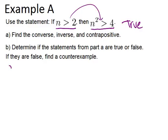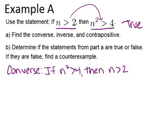With the converse, all you're doing is switching the hypothesis and the conclusion in your original statement. So that would be: if n squared is greater than 4, then n is greater than 2.